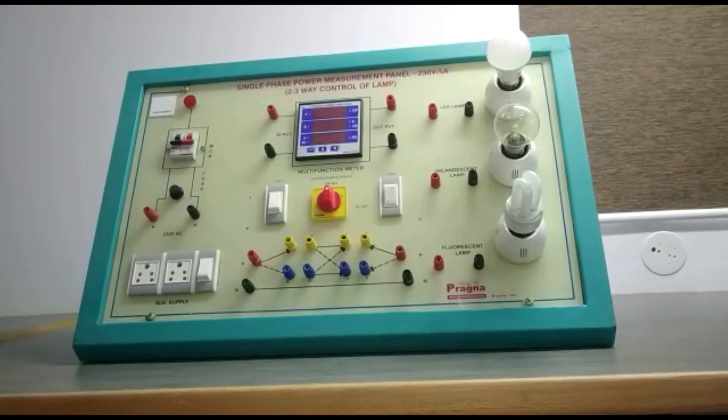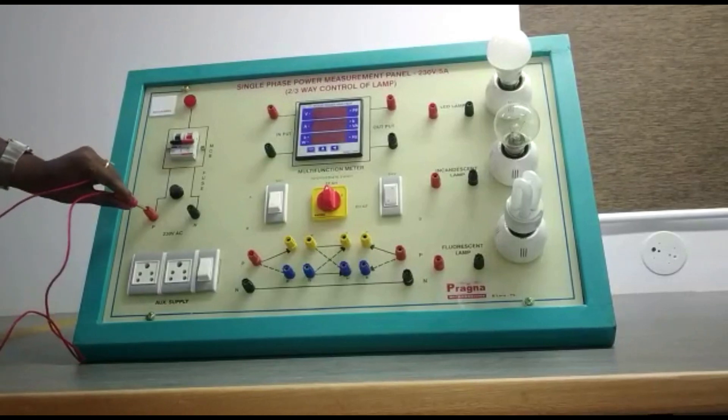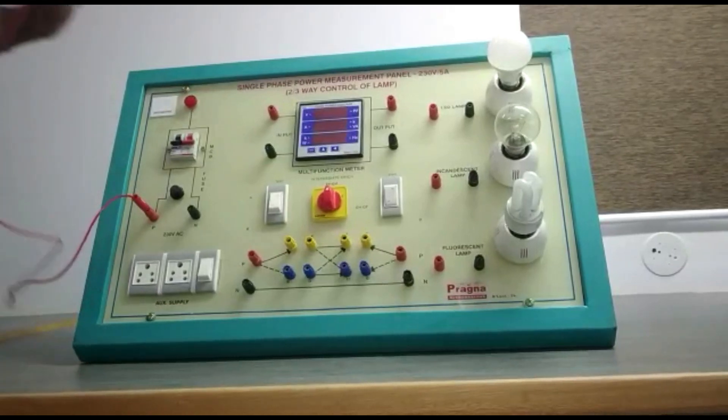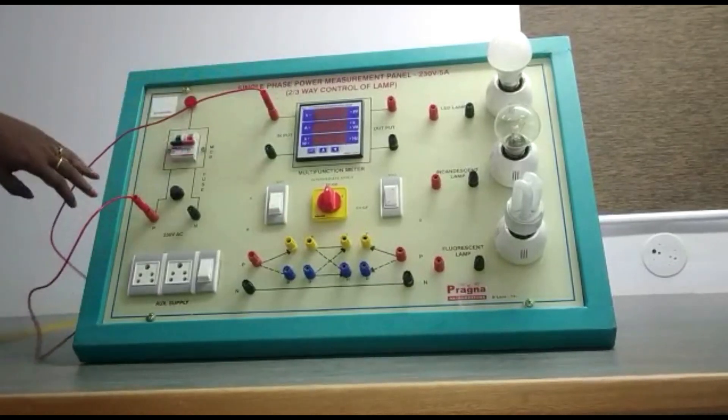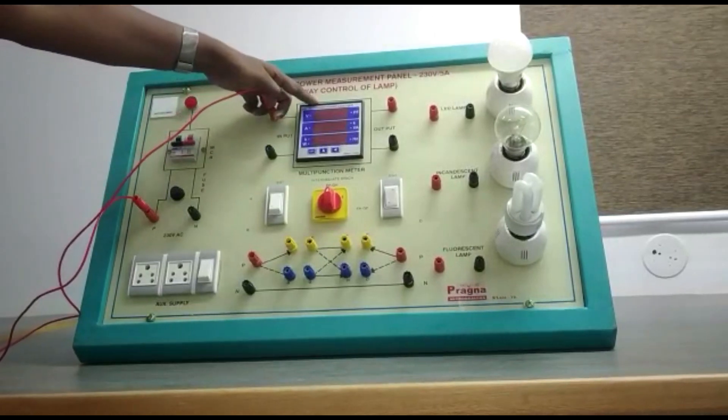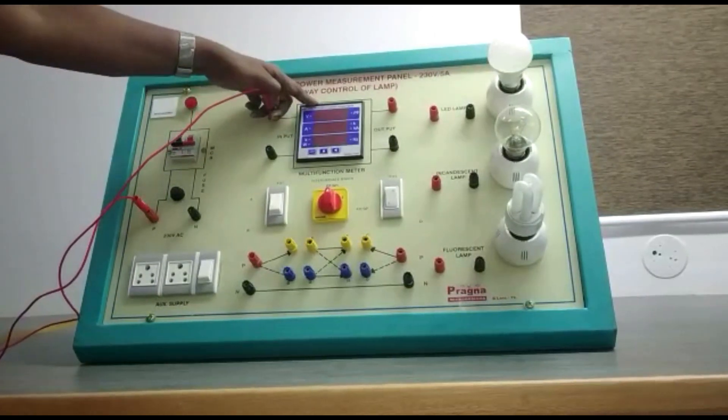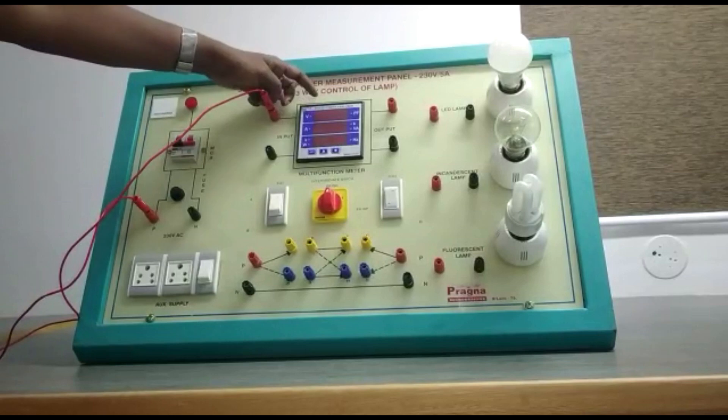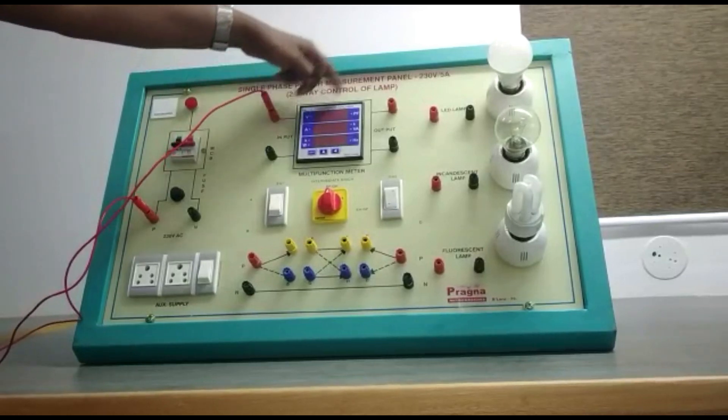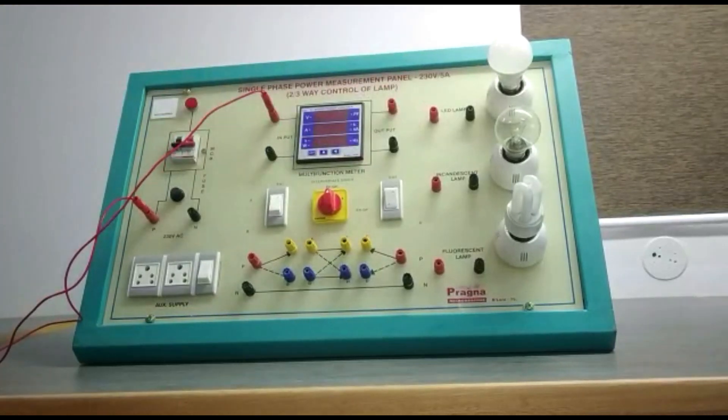Let me show you the connections first. Input from the supply is given to the input of the meter. This is the meter which is going to show all the readings - the current, the voltage, the power, and the power factor. The meter has to be connected in series through each one of them separately.